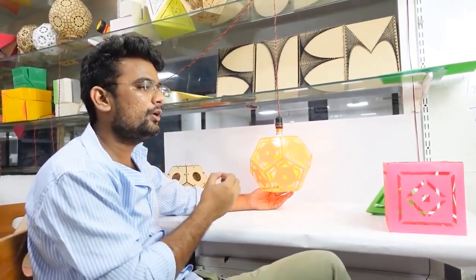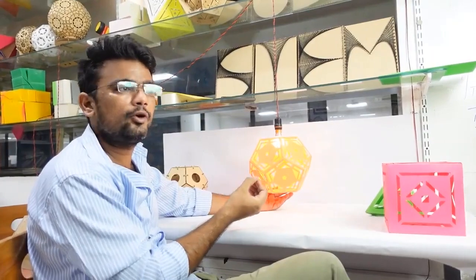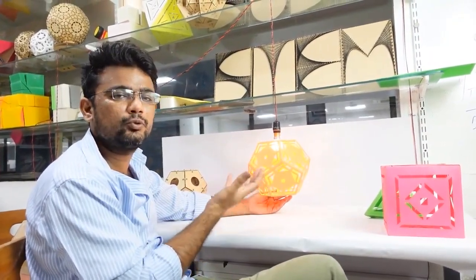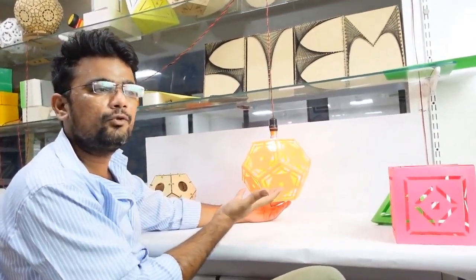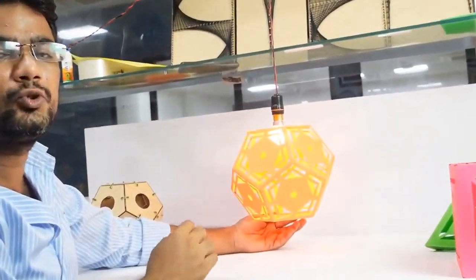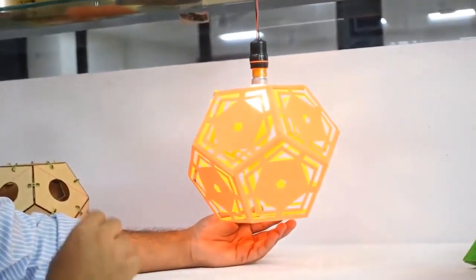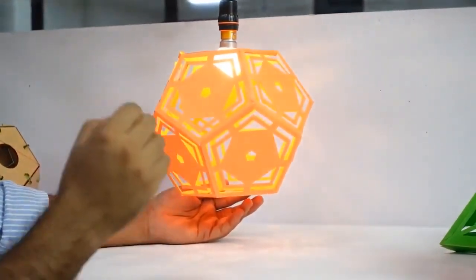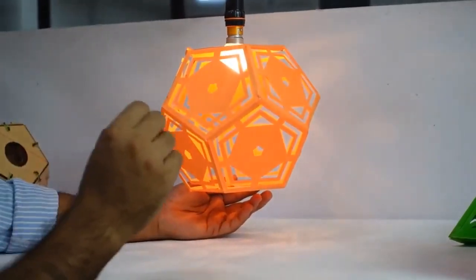Also, Hemchandra, Fibonacci numbers, and the beautiful petals of flowers look beautiful because of the golden ratio. To know more about the golden ratio, we have provided a link in the description box. You can check it out.